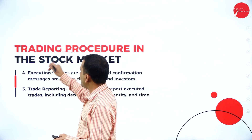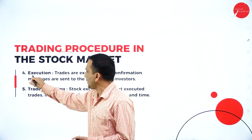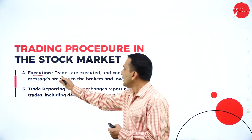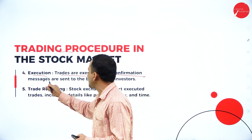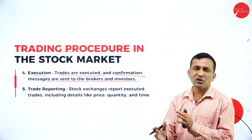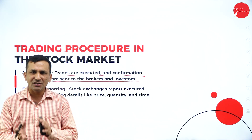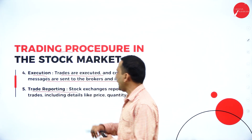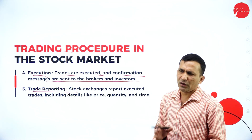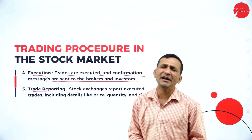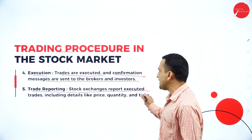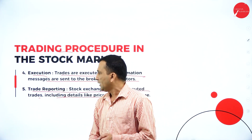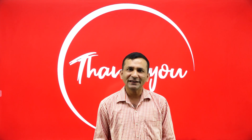Moving to the fourth step of the trading procedure: execution. After placing your buying or selling order, execution becomes a reality. Trades are executed and a confirmation message is sent to the broker or investor individually — whether individual investors or institutional investors, brokers are also notified. Next, trade reporting: we need to get a trade report covering what quantity was placed and at what price. The stock exchange reports executed trades including details like price, quantity, and time. Thank you, keep watching for the next section.